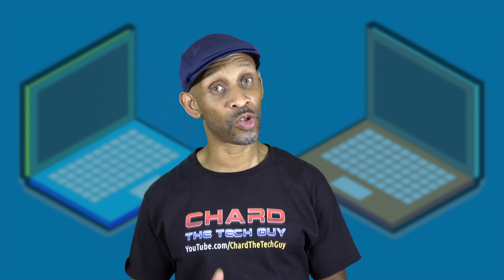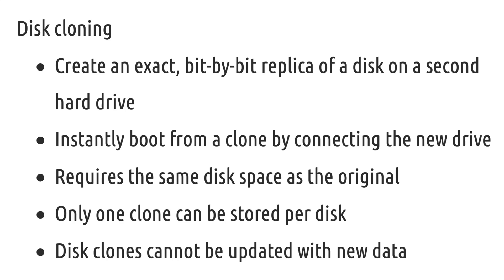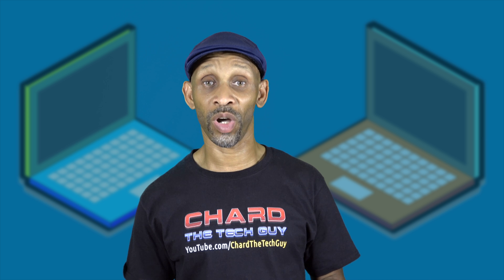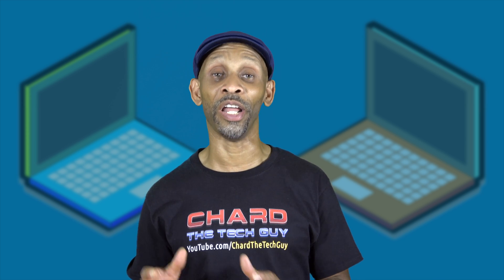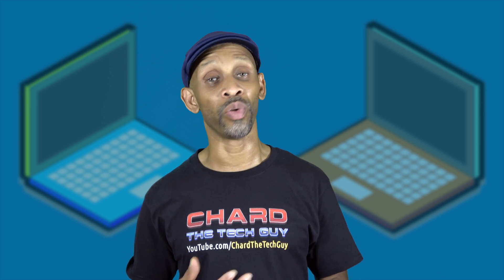When you're doing cloning, you're creating an exact bit-by-bit replica of that disk onto a second hard drive, which gives you the opportunity to create an instant boot just by connecting the new drive. It requires the same disk space or more as the original drive, and only one clone can be stored on that disk. One key point to remember: a disk clone cannot be updated with new data. Once you make that copy it's time to swap out the hard drives, because if you add anything to the old disk that information will not transfer to the new disk unless you make a new clone.